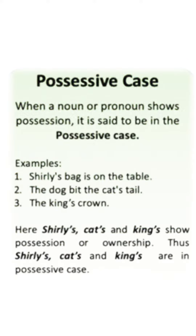Possessive case: when a noun or pronoun shows its possession, it is said to be in possessive case. Examples: Shirley's bag is on the table. The dog beat the cat's tail. The king's crown. Here Shirley's, cat's, and king's show possession or ownership. Thus Shirley's, cat's, and king's are the possessive case.